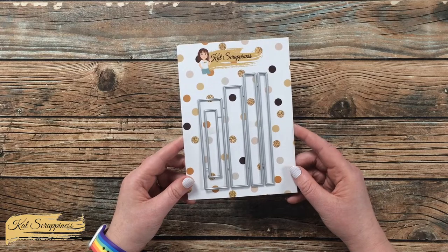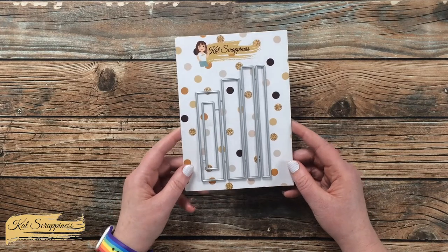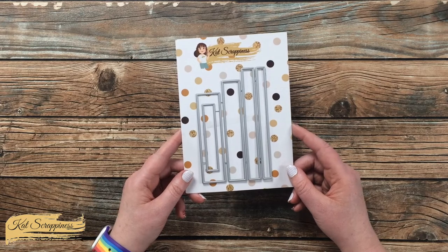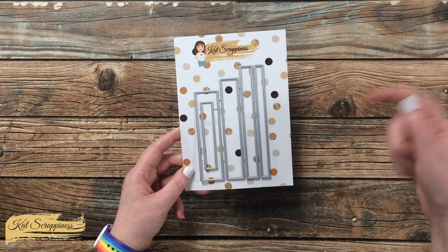Today I'm going to be sharing a look at the Boxed Sediment Strips die set. This is a set of five dies that is now available on the Cat Scrappiness website and will be linked in the description box below.